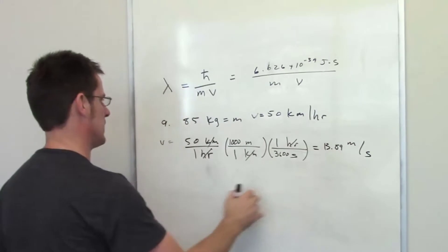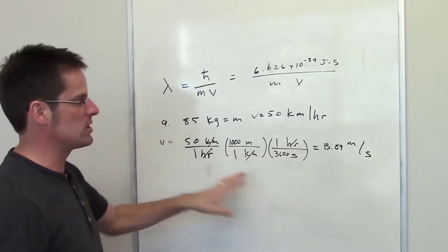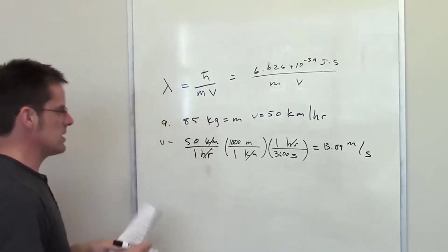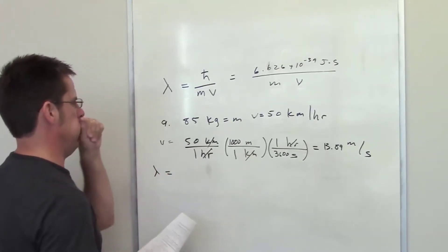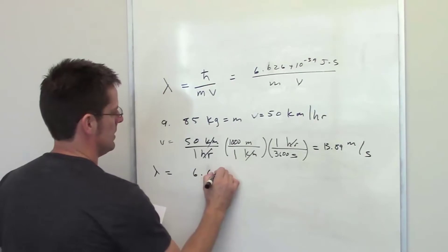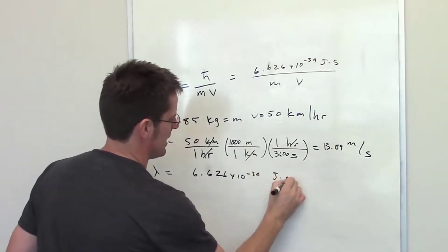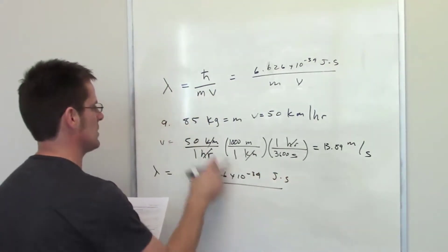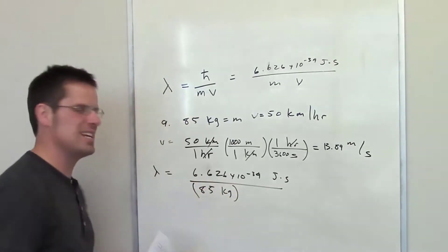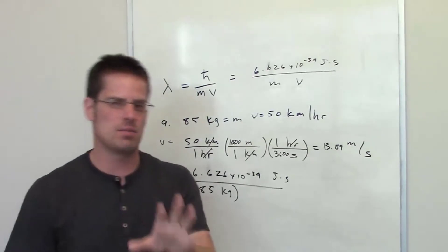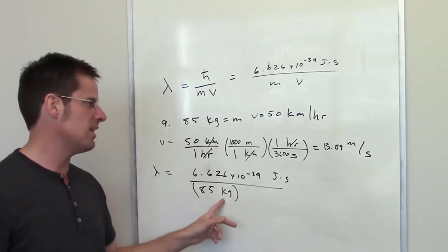I realize this doesn't have the proper number of significant figures based on the values given at the beginning. I usually don't end up adjusting for significant figure numbers until I get to the very end of my problem. From 6.626 times 10 to the negative 34 joules times seconds, divided by the mass.